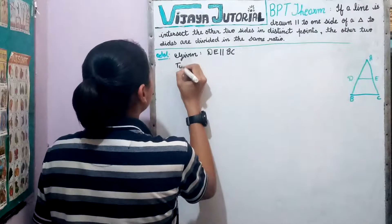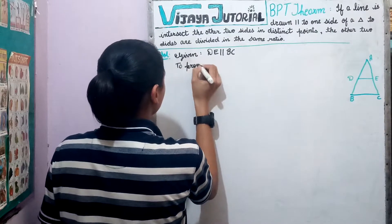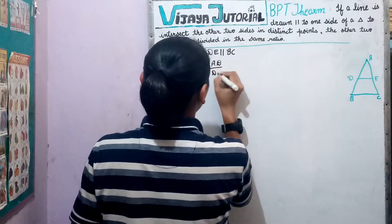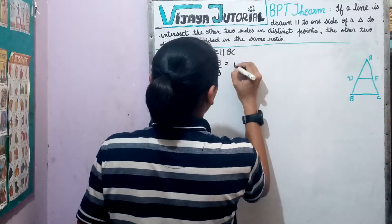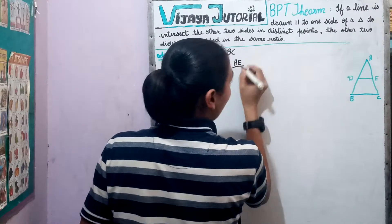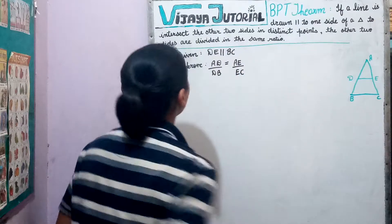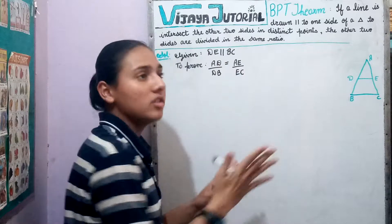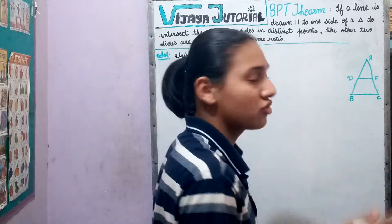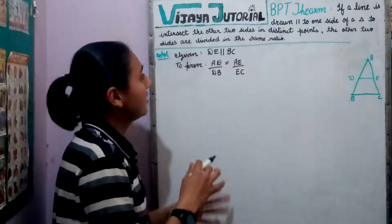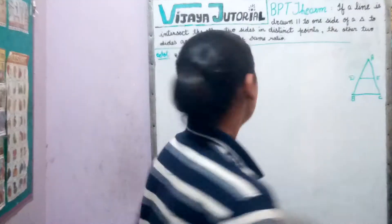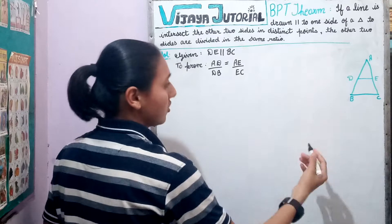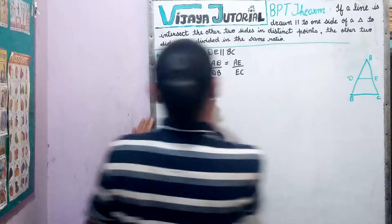Given: to prove AD upon DB is equal to AE upon EC. When we do the derivation of any theorem, we have to write all the mentioned things — given, to prove, construction, proof — all these things are necessary to write in the derivation of a theorem. Now, to prove this, we will do some constructions in the figure.